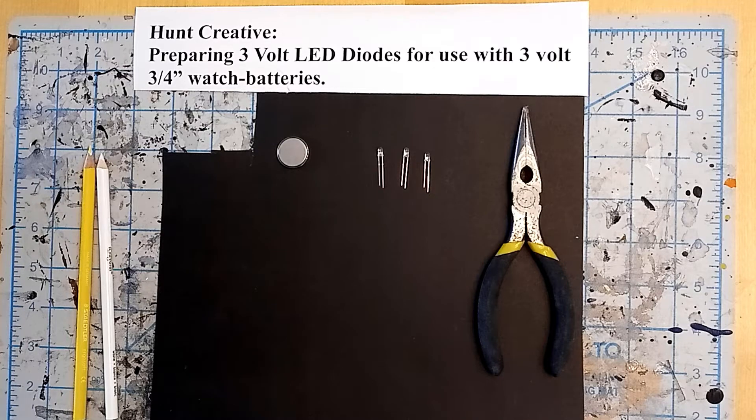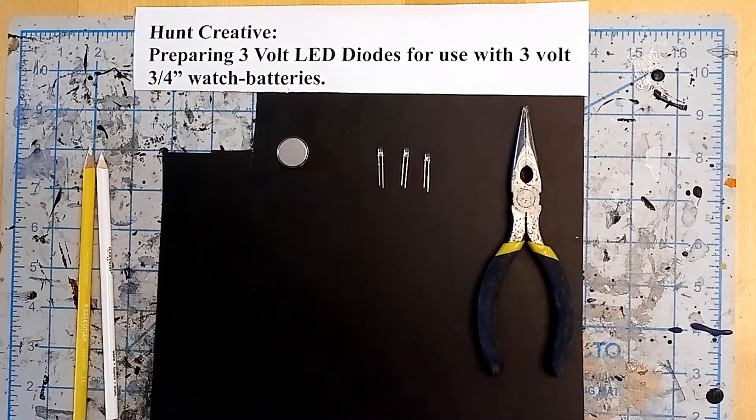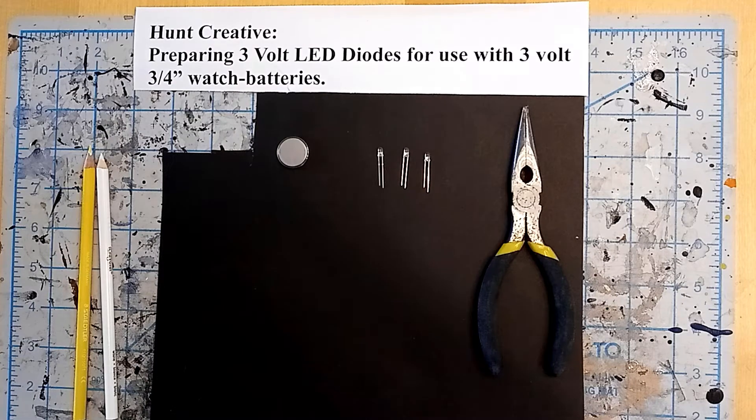Hello everybody, welcome back to Hunt Creative. Today we're going to be preparing some 3 volt LED diodes for use with some 3 volt 3 quarter inch watch batteries. Hat tip to Matt from RP Archive for this idea.